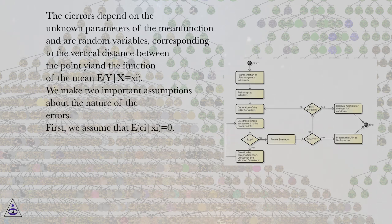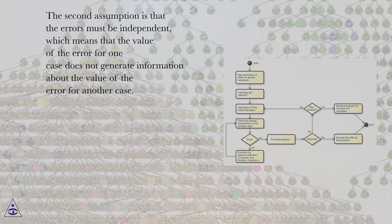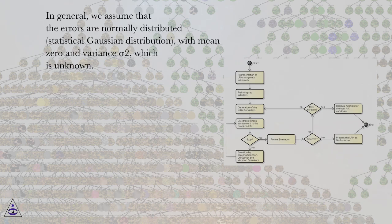We make two important assumptions about the nature of the errors. First, we assume that E[εi|xi] equals 0. The second assumption is that the errors must be independent, which means that the value of the error for one case does not generate information about the value of the error for another case. In general, we assume that the errors are normally distributed, statistical Gaussian distribution, with mean 0 and variance sigma squared, which is unknown.